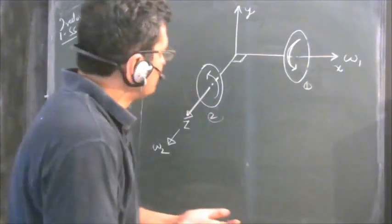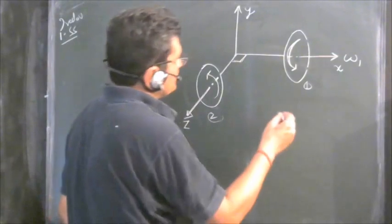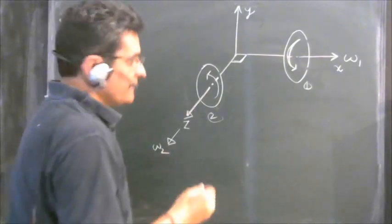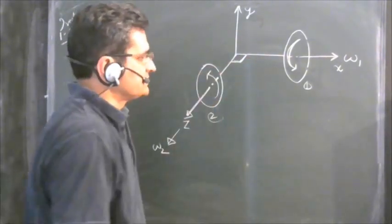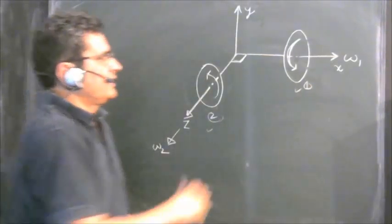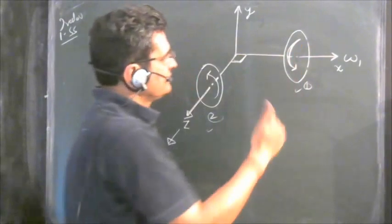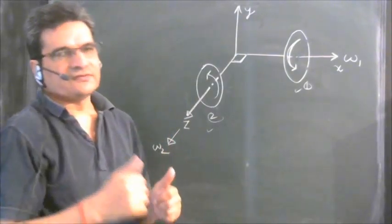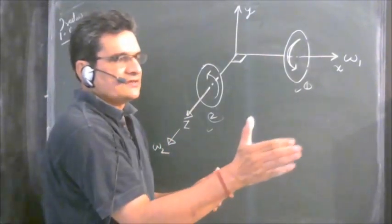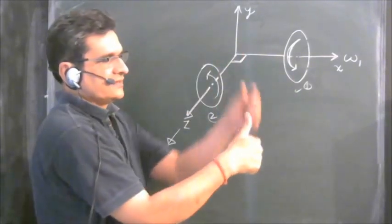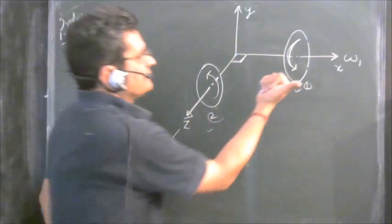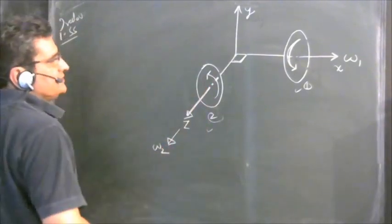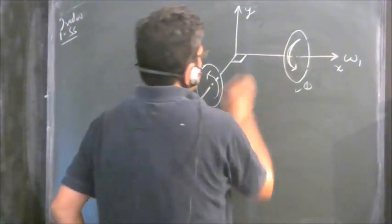We will solve problem 1.55. In this problem there are two discs rotating along their axes, and their axes are perpendicular to each other. Let this be disc 1 and this be disc 2. Disc 2 is rotating in this direction — if you look from that side it rotates anti-clockwise. Angular velocity is a vector quantity; using the right-hand thumb rule, the direction of angular velocity gives us omega 1 and omega 2.